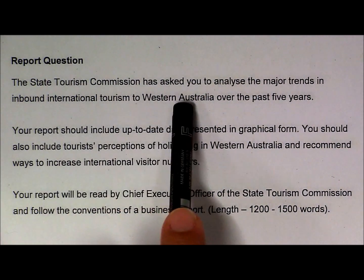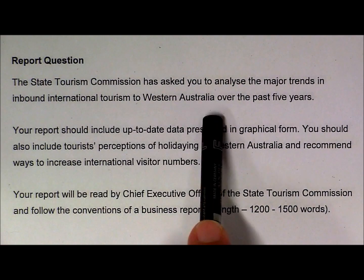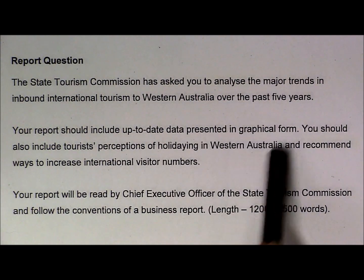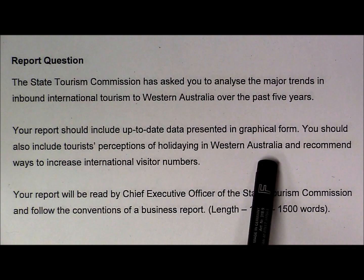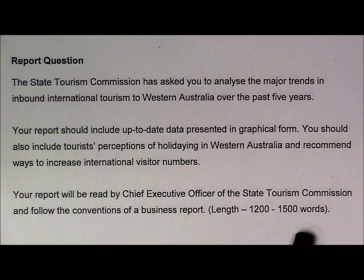The State Tourism Commission has asked you to analyse the major trends in inbound international tourism to Western Australia over the past five years. The report should include up-to-date data presented in graphical form. It should also include tourist perceptions of holidaying in Western Australia and recommend ways to increase international visitor numbers. Your report will be read by the Chief Executive Officer of the State Tourism Commission and follow the conventions of a business report, with a word length of about 1,200 to 1,500 words.